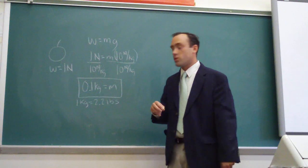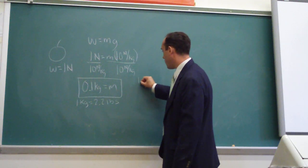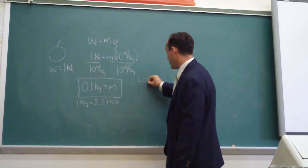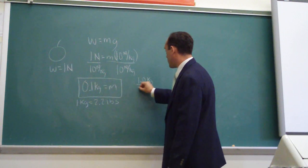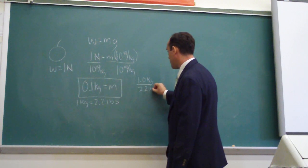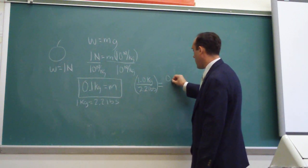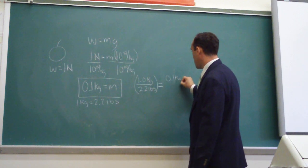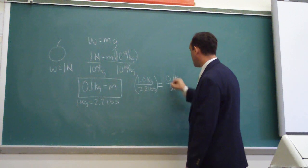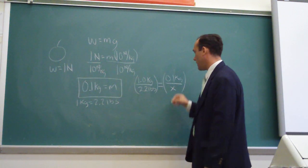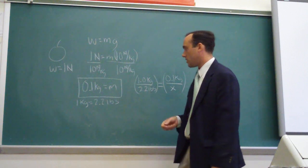So we can set up a simple ratio that says we have 1.0 kilograms per 2.2 pounds. We have 0.1 kilograms over x, and x would be the mass in pounds.